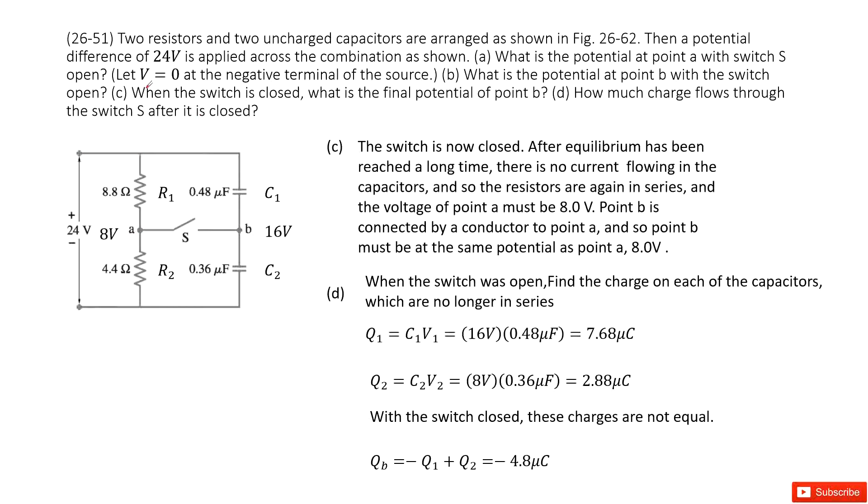Part C asks you, when the switch is closed, what is the final potential of point B? So we can see, this is 8 volts. As we talk about, this is 8 volts, it's stable.